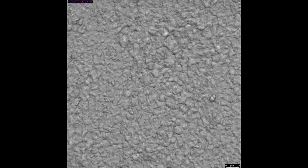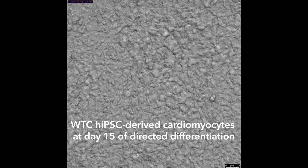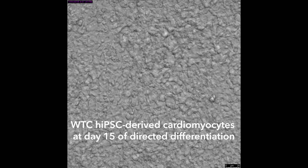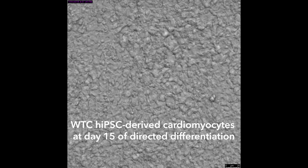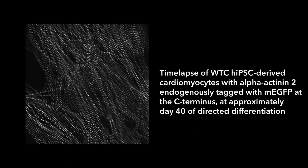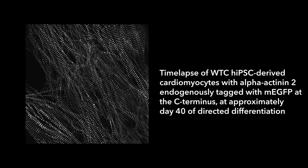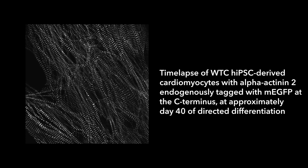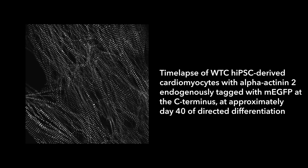Here, we use induced pluripotent stem cells as a model system because it allows us to study the tagged proteins in diploid non-transformed cells. Additionally, since the cells can be differentiated into multiple cell types, like the cardiomyocyte cells shown here, this approach provides the opportunity to create and study tagged proteins in a variety of isogenic cellular contexts.